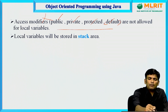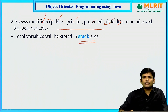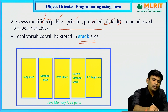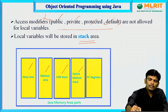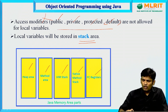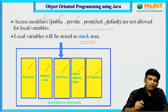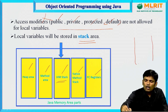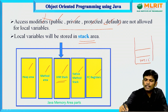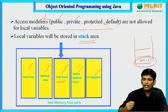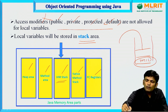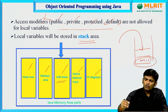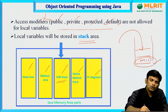Local variables will be stored in the JVM stack area. The JVM has different memory locations — heap area, method area, JVM stack, native method stack, and PC register. Whenever a method call happens, the method is stored in the stack, and all its local variables are stored inside the JVM stack.